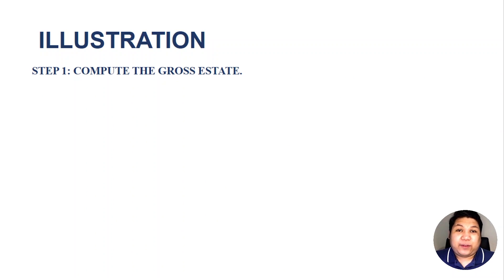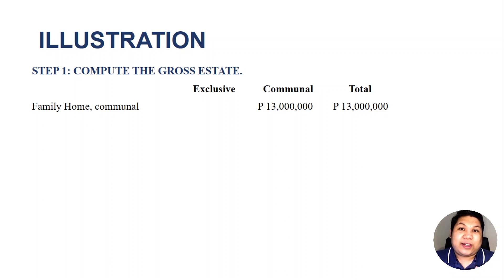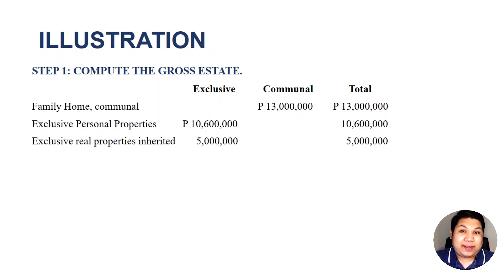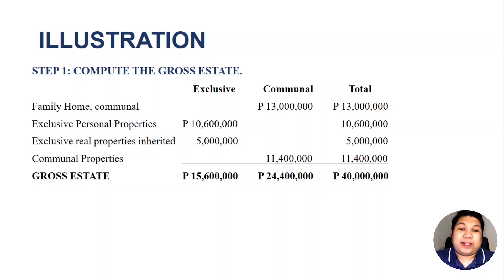Step 1: compute the gross estate. We will classify our properties as either exclusive or communal, for the sake of computing the share of the surviving spouse later on. We have the family home, which the problem states is communal, so we add it to communal property. We also have exclusive personal properties of 10,600,000; exclusive real properties inherited from his mother of 5,000,000; and communal properties of 11,400,000. Therefore, the total gross estate is 40,000,000 — exclusive is 15,600,000 and communal is 24,400,000.